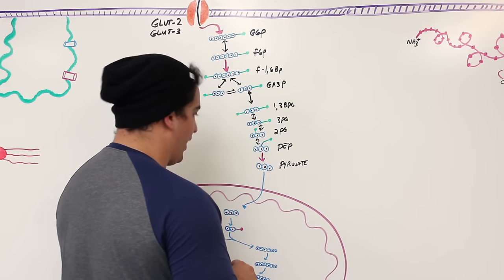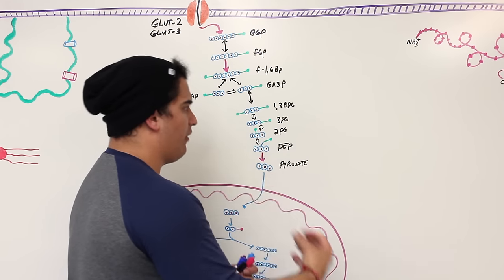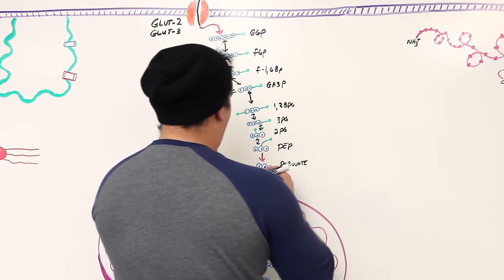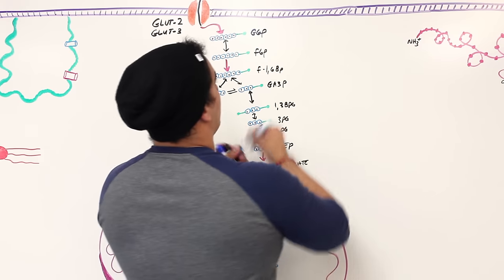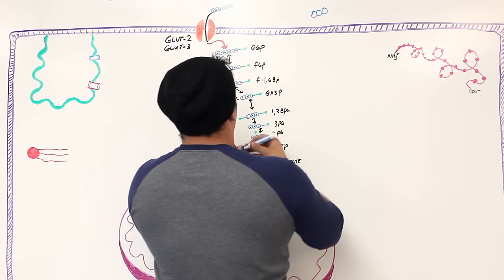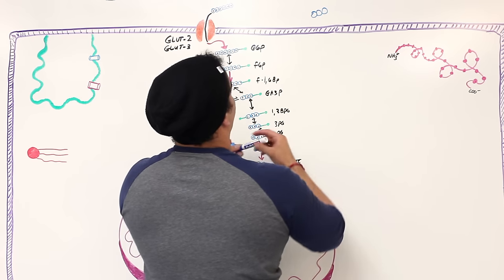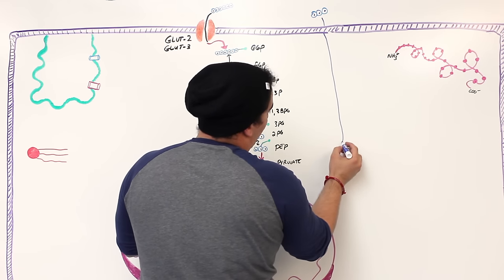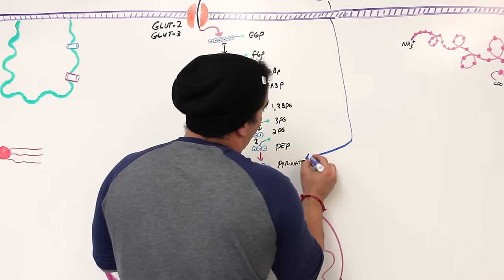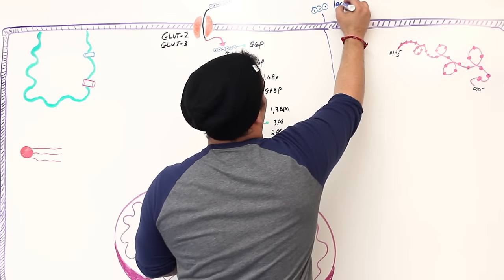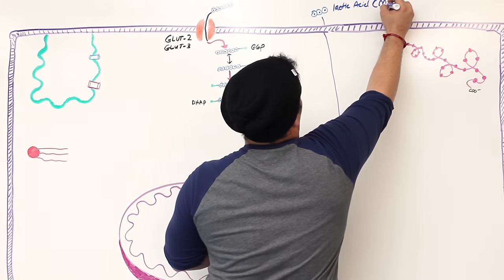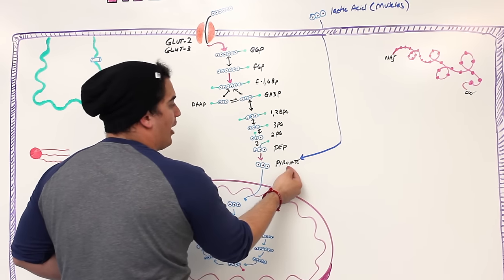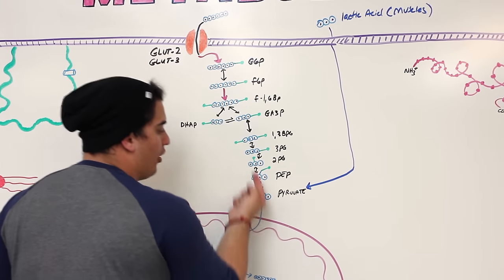Let's say your muscles are contracting and developing a lot of lactic acid. That lactic acid — represented as three carbons, similar to pyruvate — comes into the cell. It then gets converted into pyruvate. But pyruvate can't go directly back up to phosphoenolpyruvate, so it has to find another route.